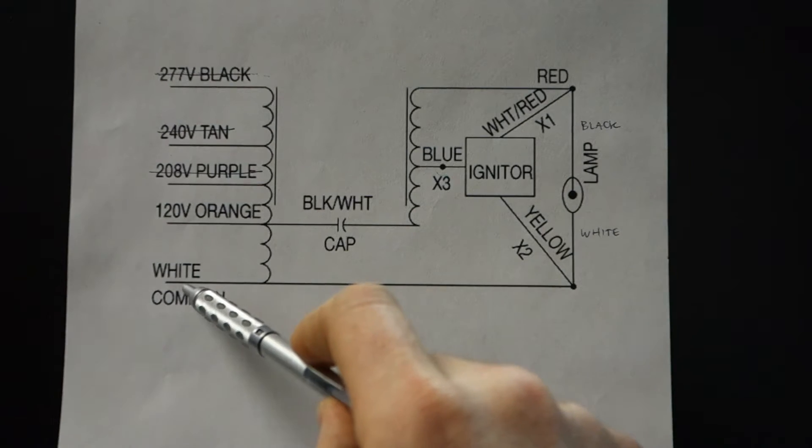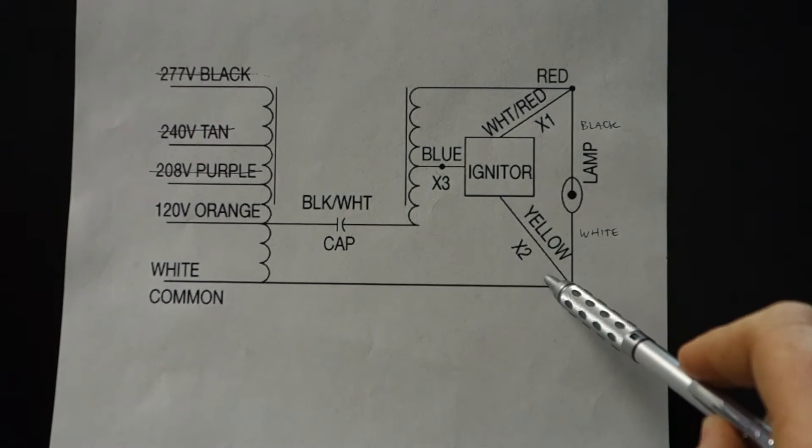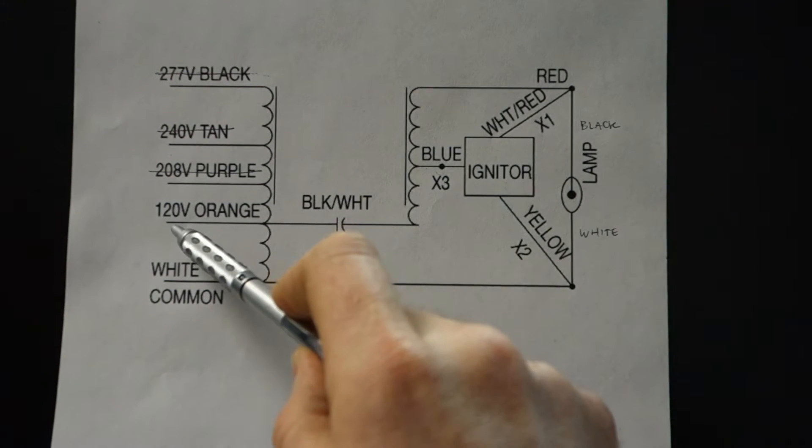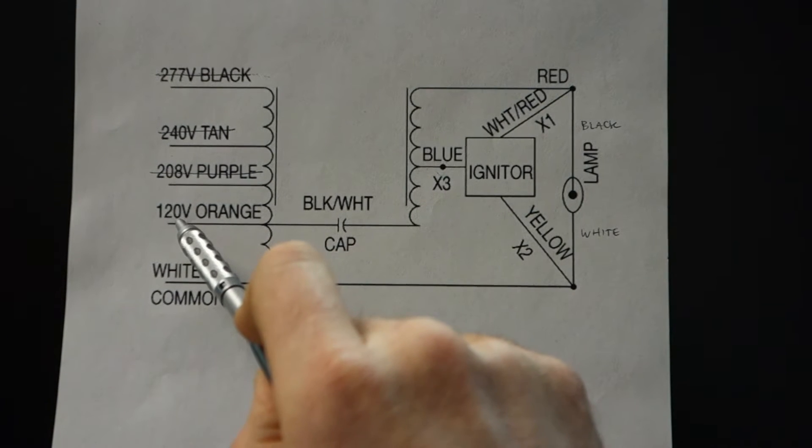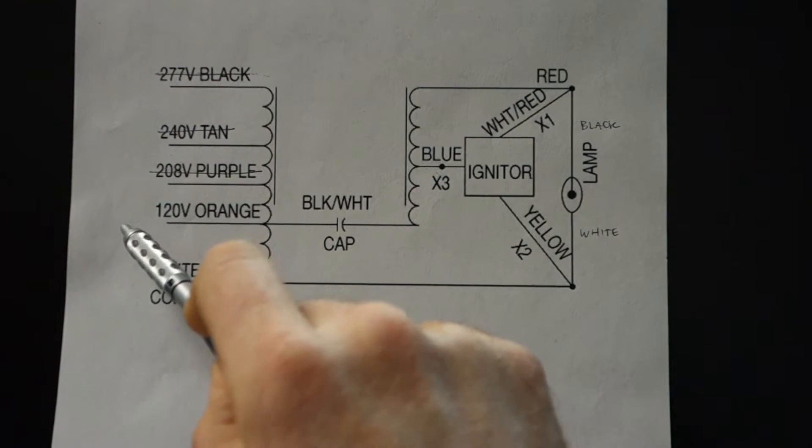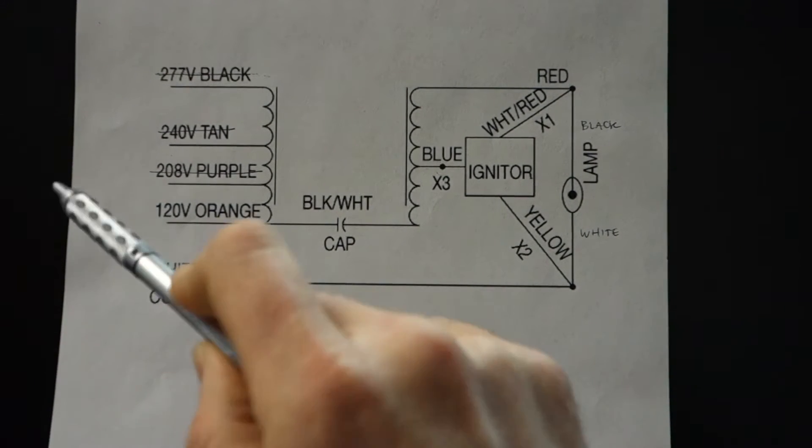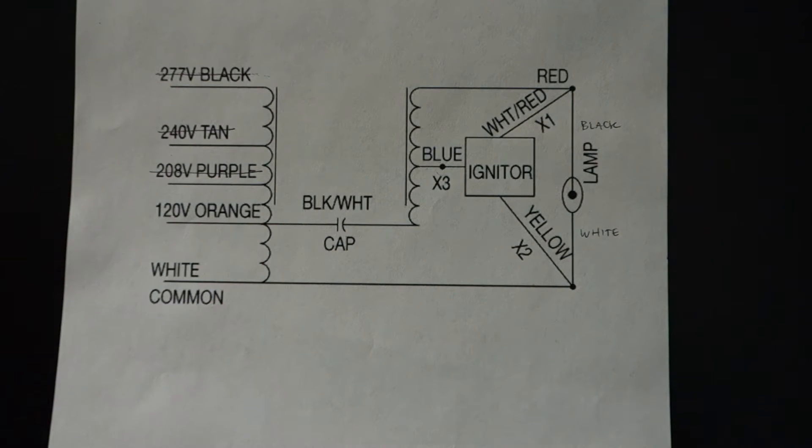And then our white common wire will connect there. The 120 volt will also connect to the 120 volt plug, which will plug directly into the wall. So that's everything. All the wires are labeled pretty clearly. It shouldn't be too difficult. Like I said, we're looking for five connection points, and that's it.